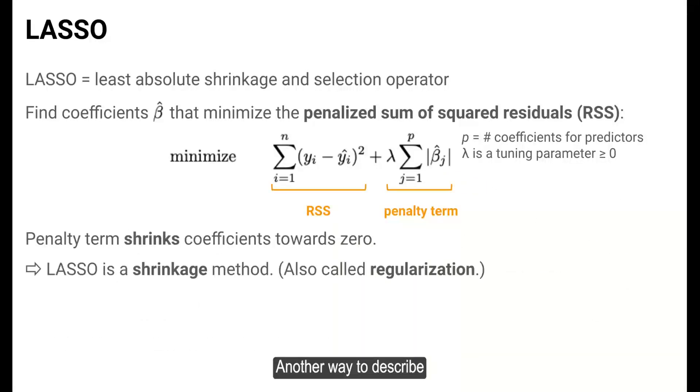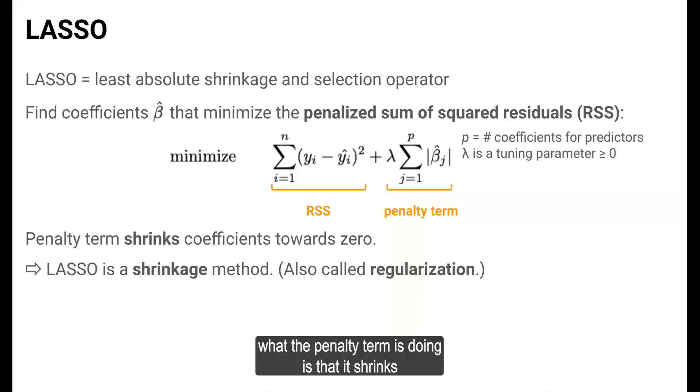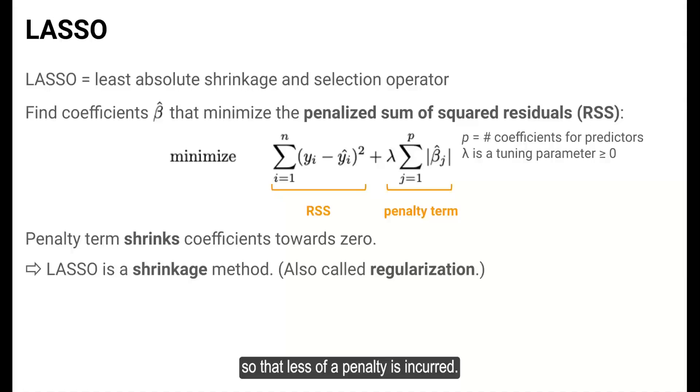Another way to describe what the penalty term is doing is that it shrinks coefficients towards zero, so that less of a penalty is incurred. This is why LASSO is called a shrinkage method. A synonym for this in statistics and machine learning is called regularization.